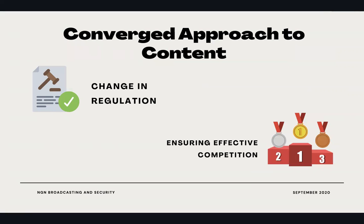The approach is to have converged content. First, we need to change regulation. With anyone from anywhere having the ability to provide content, it is important to address differences in social-economic interest, cultural diversity, national identity, and standard decency. Different countries may have different standards, so regulation must be agile enough to fit every country, as NGN covers every part of the world. We should also ensure effective competition, giving everyone equal access to content and appropriate use of the digital dividend spectrum so that proper service is delivered.